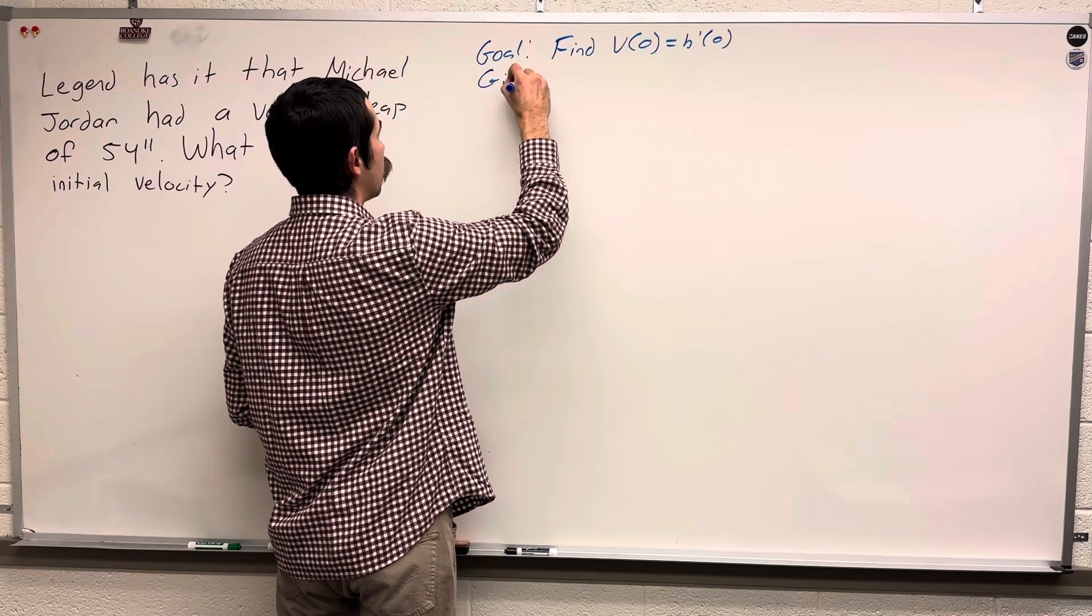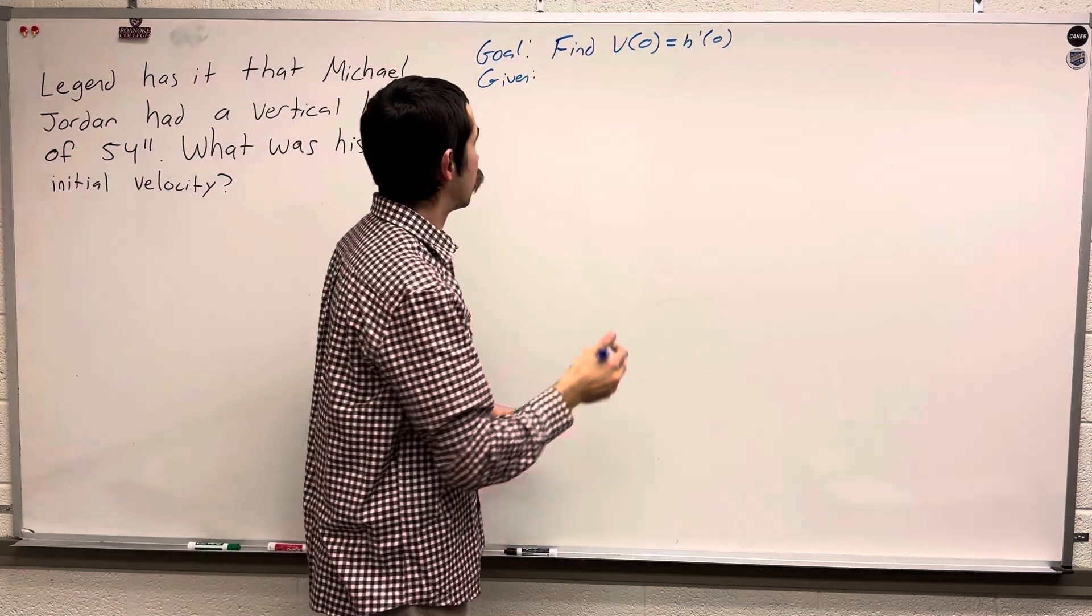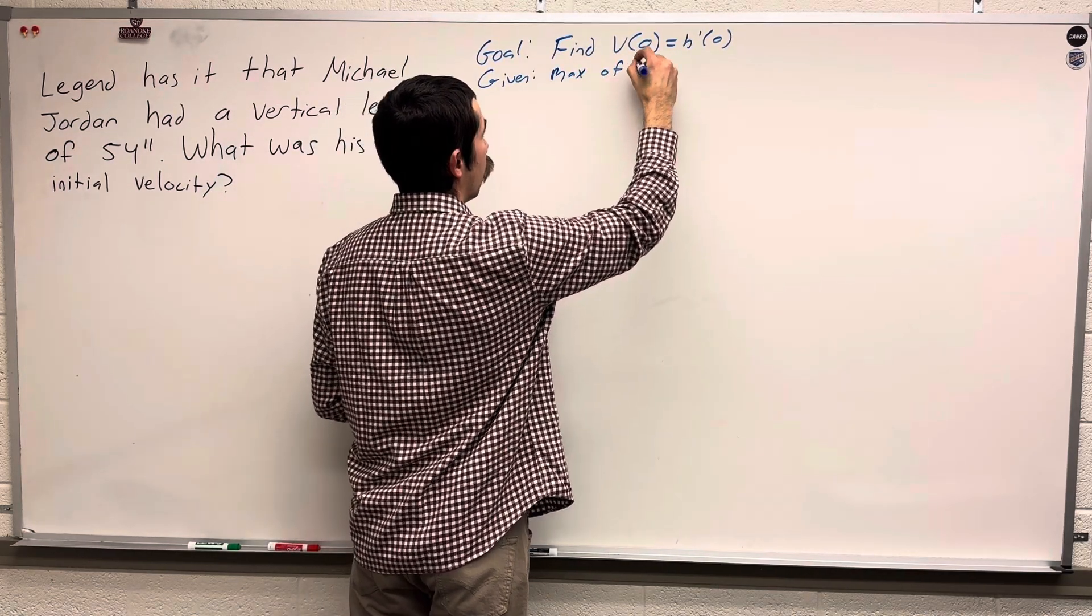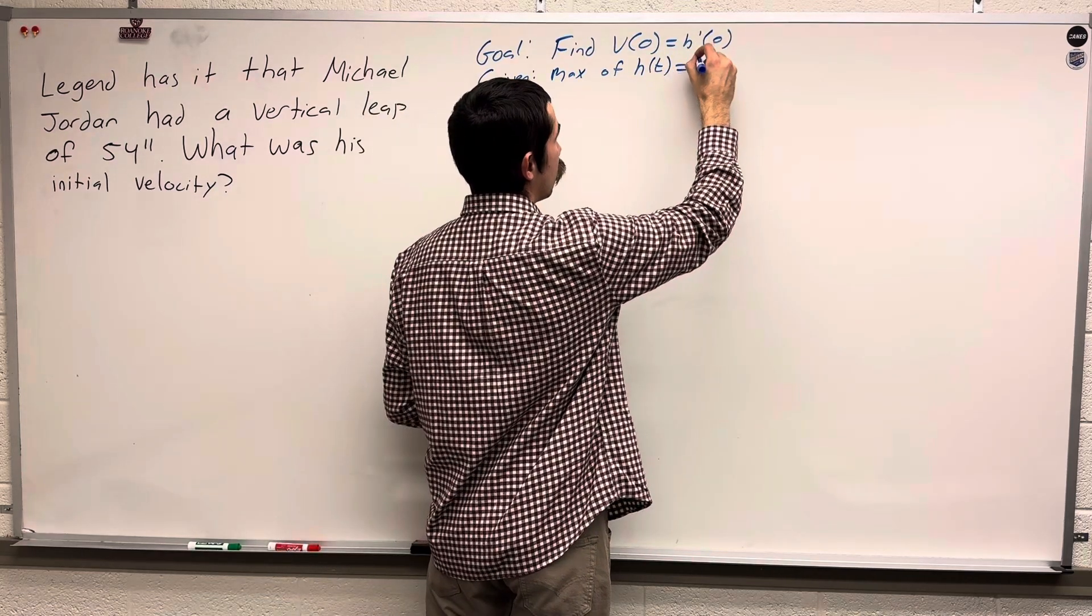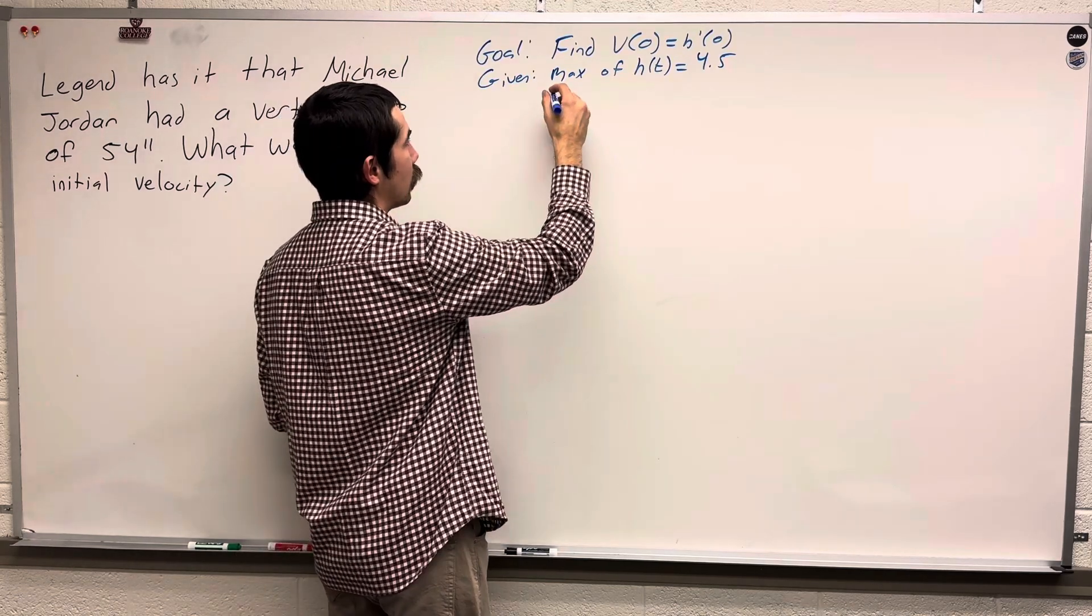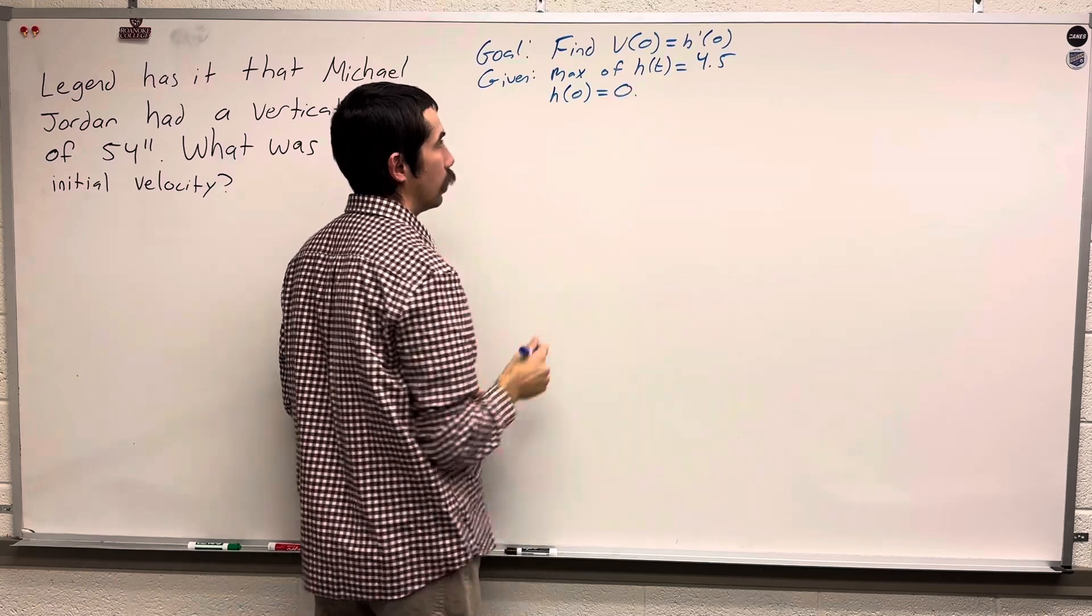We're given that his max height is 54 inches. So max of h of t is 54 inches, which in feet is 4.5 feet. And we're also given that he's leaving from the ground, so h of 0 is 0.